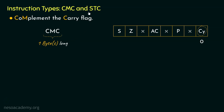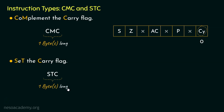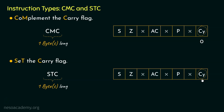Let's now focus on the next instruction type STC. STC stands for set the carry flag — S and T come from 'set' and C comes from the carry flag. Similar to CMC, STC also falls under the 1-byte-long instructions category. Continuing from the previous example, after execution of CMC the carry flag was reset to 0. Execution of STC will now set the carry flag — in other words, the carry flag will have the value 1. No matter what the carry flag's initial value is, execution of STC will always set it to 1.